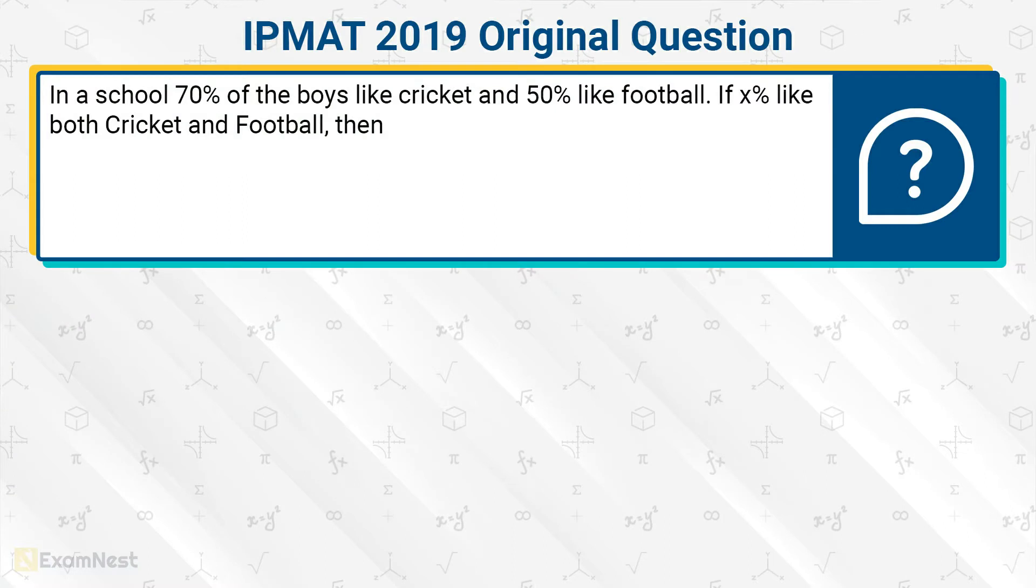In a school, 70% of the boys like cricket and 50% like football. If X percent like both cricket and football, then what is the range of X? And the options are given.